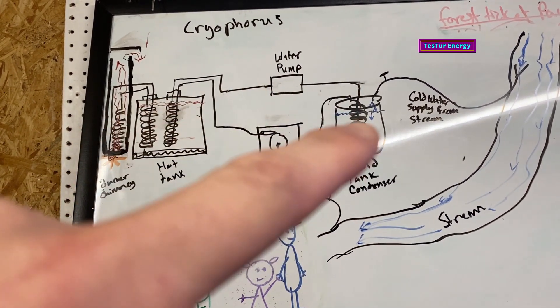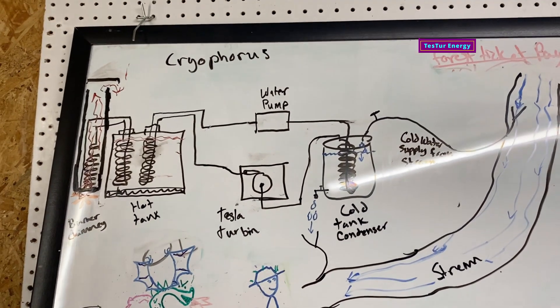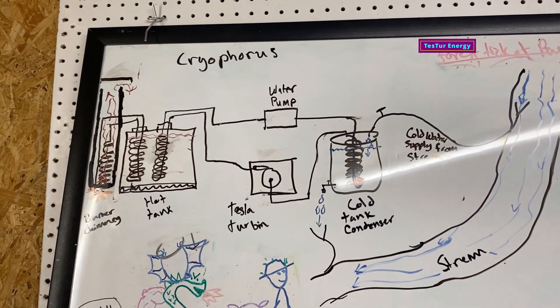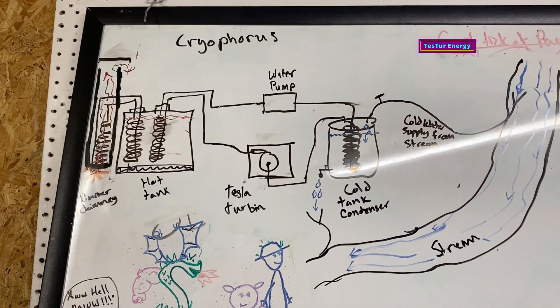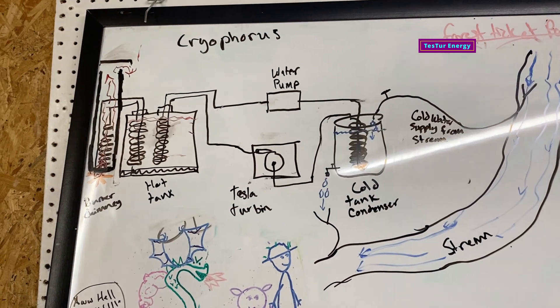And then copper pipe here and PEX through all of there just because the copper pipe is really expensive right now I think because of what's going on and just supply and demand. But the copper pipe will give you a better heat exchange rate with the water.